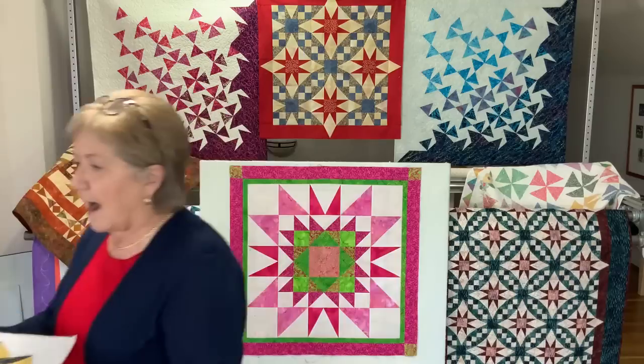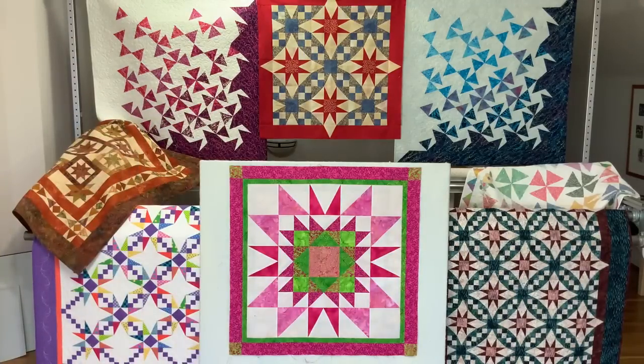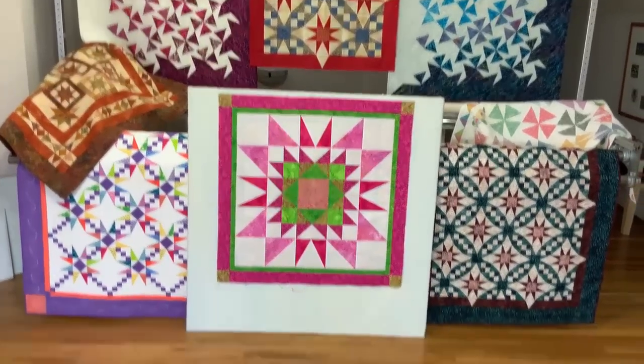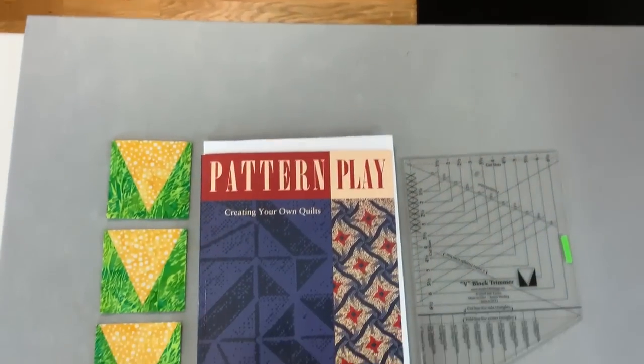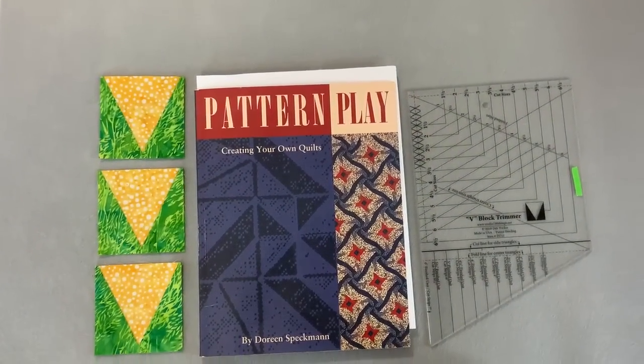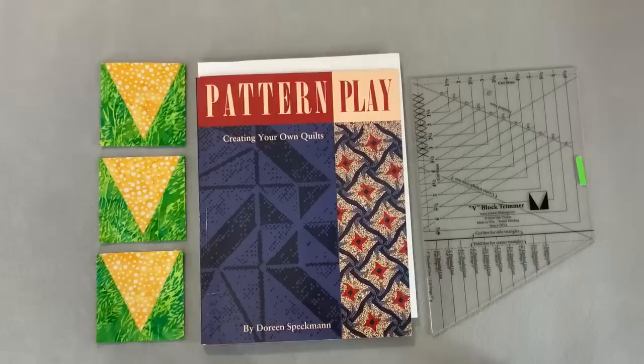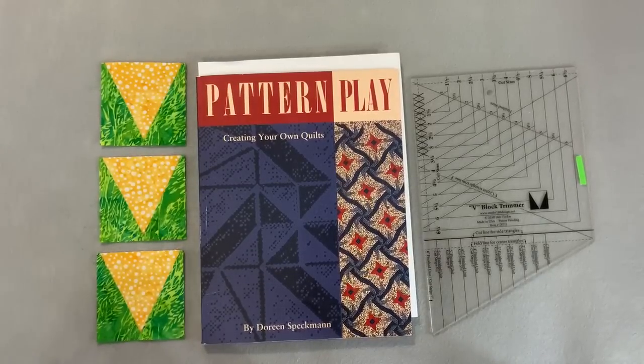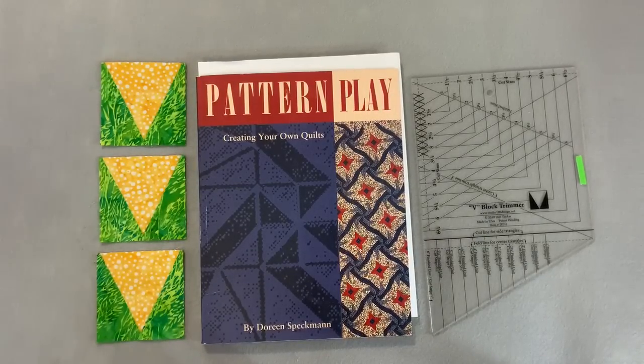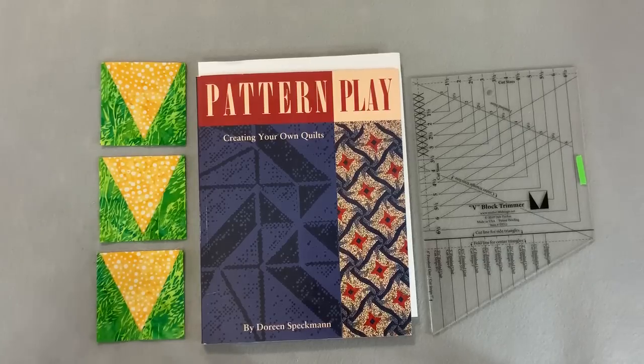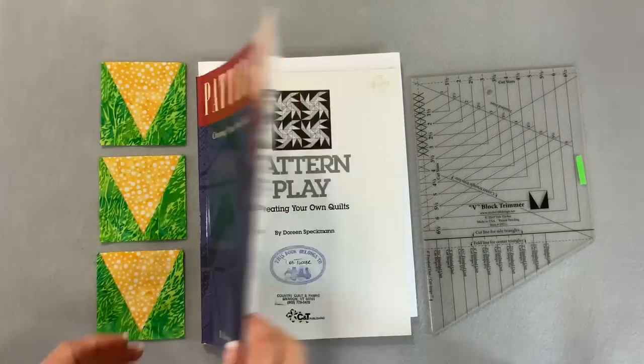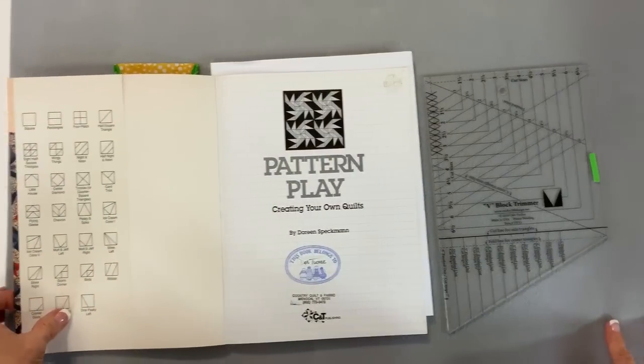So let's take a look at what we've got and I'm going to drop the camera down here to view our tabletop. And what you see on the table is my first experience with working with this unit. A number of years ago, a very famous quilter named Dorian Speckman wrote a book called Pattern Play. She was truly one of my heroes when I was first learning how to quilt because in this book, she proposed a very sound and sensible philosophy.